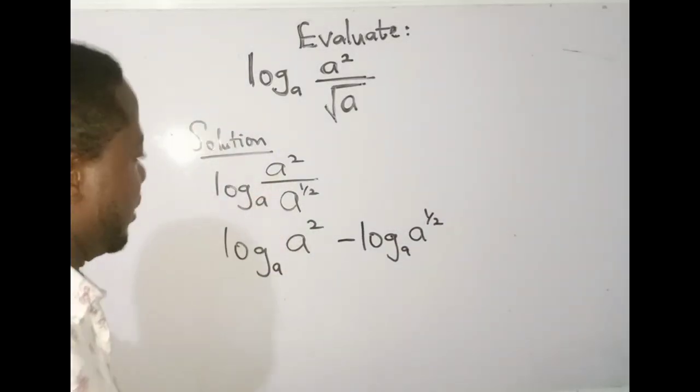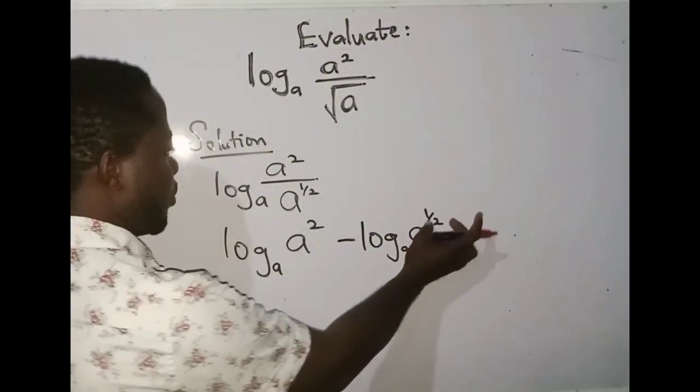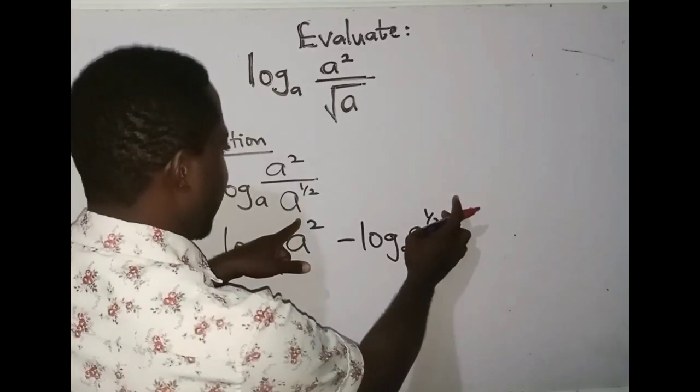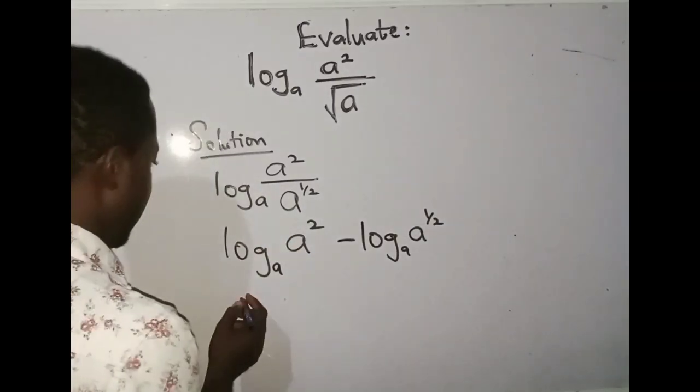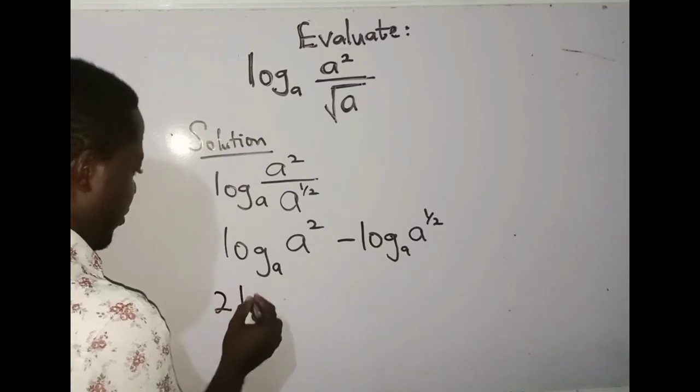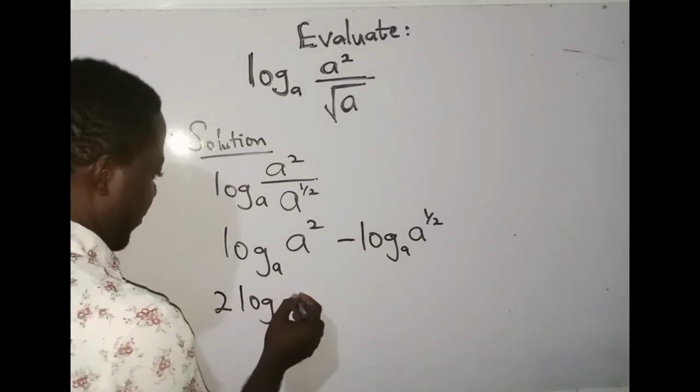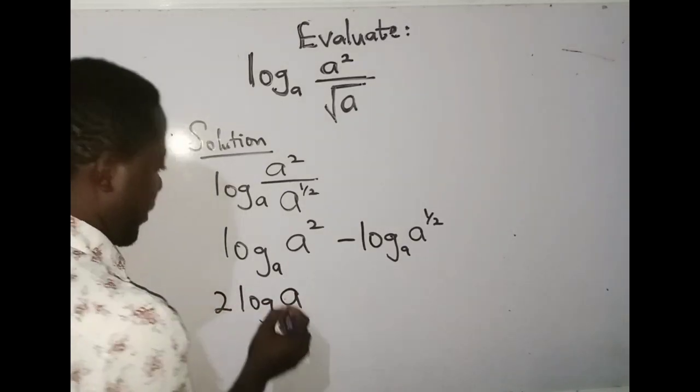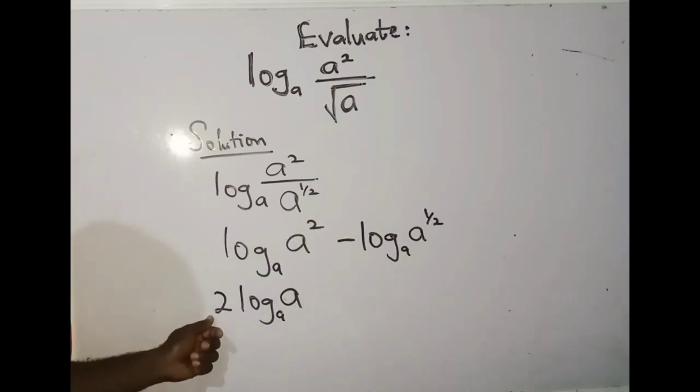Now I've applied the division rule. The next thing to do, once we have powers, the powers come to the front. So in that case, I'm going to have 2·log_a(a). This square has been moved to the front.